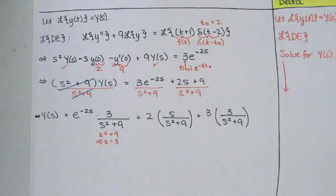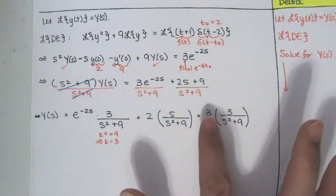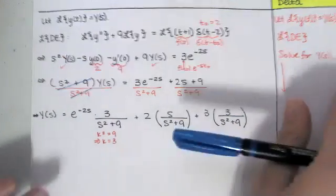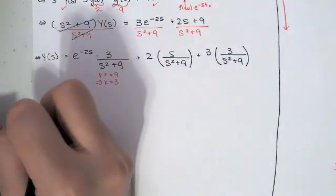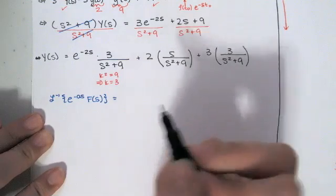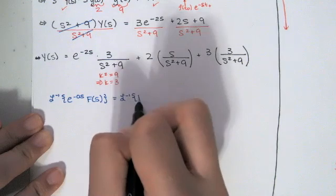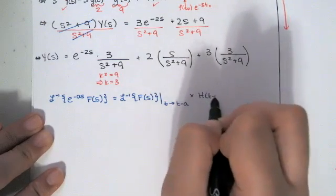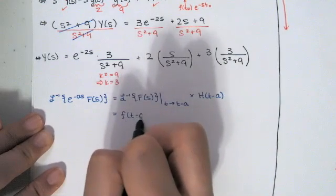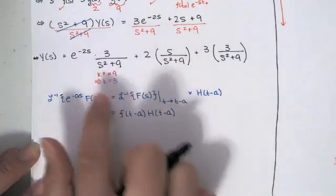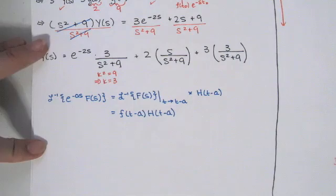These two pieces are straightforward. The inverse transform of 2·[s/(s²+9)] is 2·cos(3t), and the inverse transform of 3·[3/(s²+9)] is 3·sin(3t). For the e^{-2s}·[3/(s²+9)] piece, we use the second translation theorem: if we have e^{-as}·F(s), the inverse transform is f(t-a)·H(t-a), where f(t) is the inverse transform of F(s) and H is the Heaviside function.